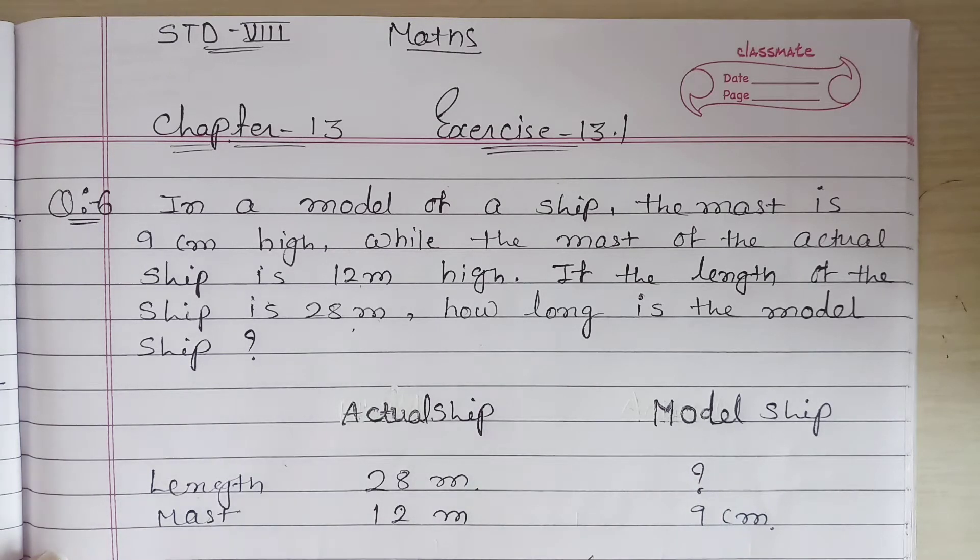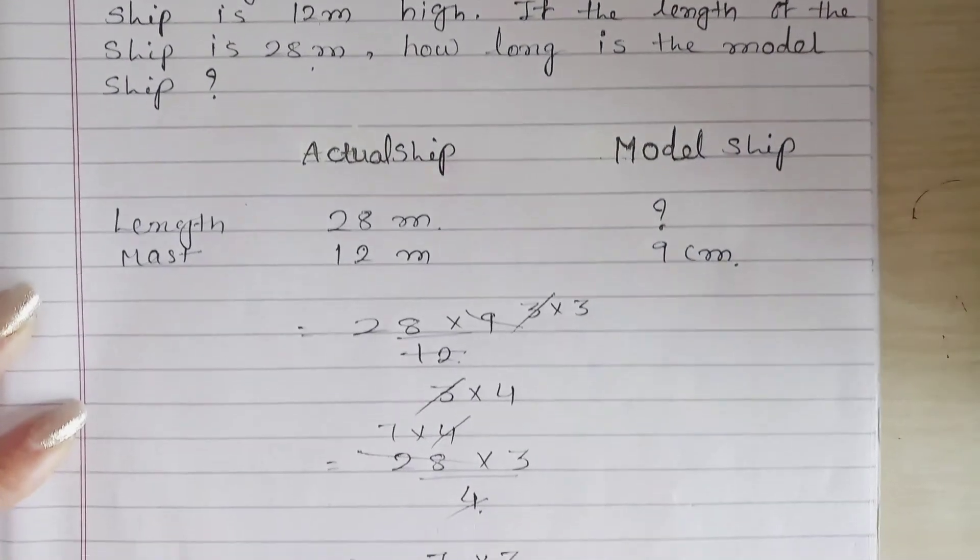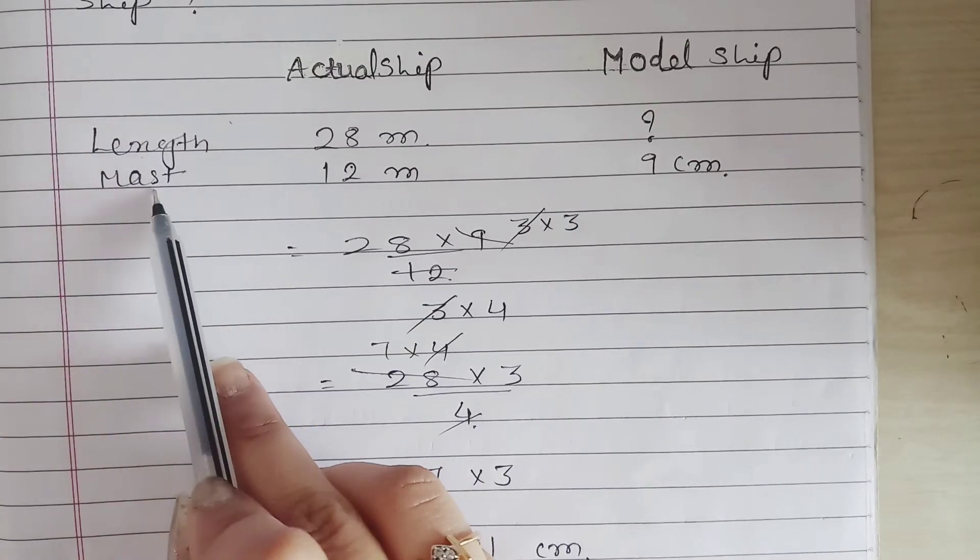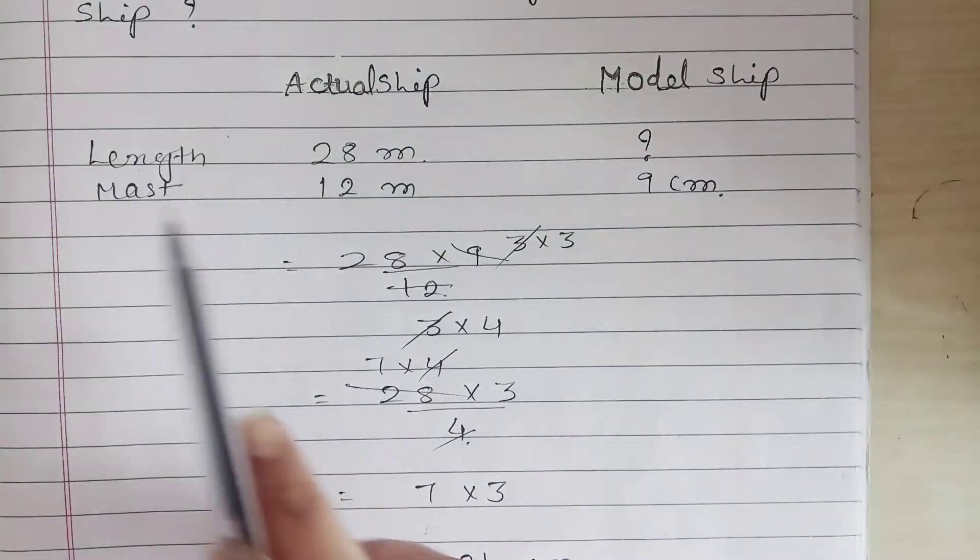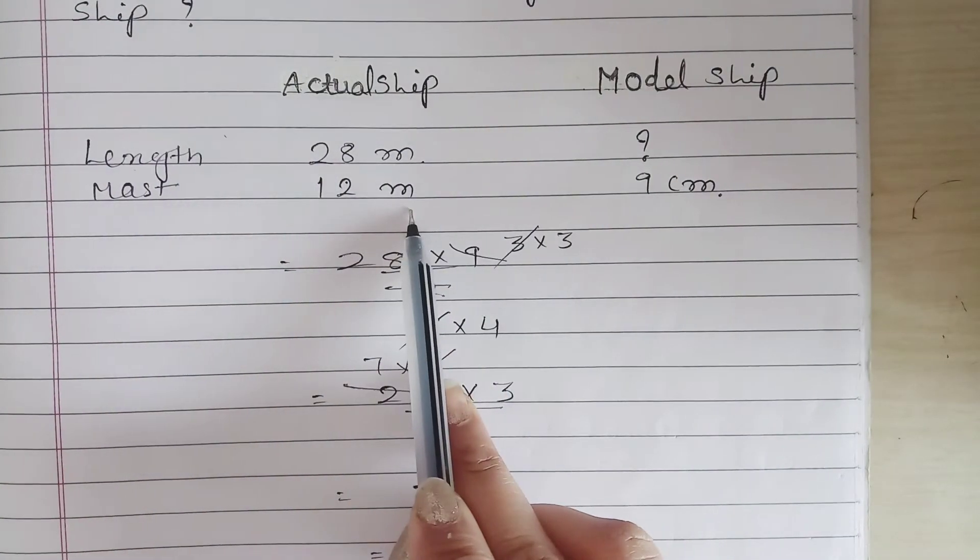Cross multiply karenge. Length and mast yaha pe likha hai: actual ship and model ship. Actual ship agar 28 meter ka hai toh is ka mast hai 12 meter ka. Obviously mast jo hai wo centimeter me hoga.